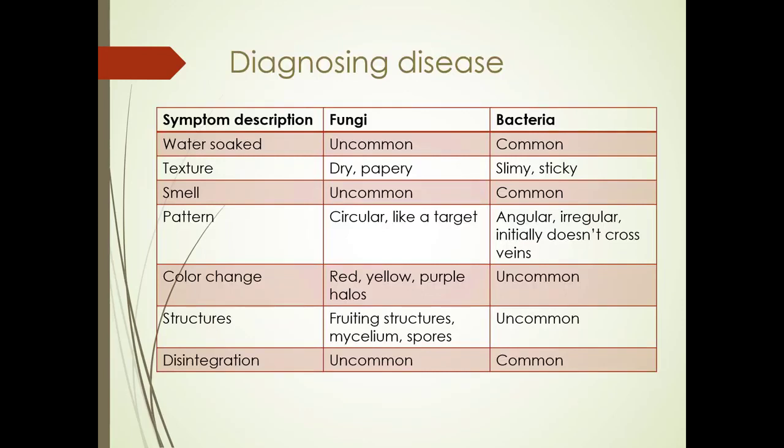When comparing fungi and bacteria, fungi are not going to have a water-soaked appearance — mostly talking about leaf spots here. The texture for fungi would be dry or papery, while bacteria would be slimy or sticky. Patterns of fungal leaf spots tend to be circular like a target, whereas bacteria tend to be irregular and angular, and usually don't start off crossing the veins, though they will eventually.